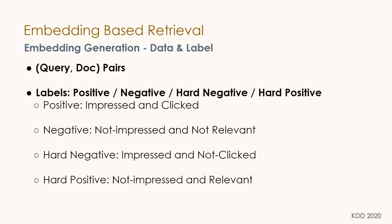For data and labels, we organize input data as query-document pairs. A document that is impressed and clicked is considered a positive. A document that is not impressed and not relevant is considered a negative. We also extend to hard negative — impressed but not clicked — and hard positive — not impressed but relevant. These are used for hinge loss training.